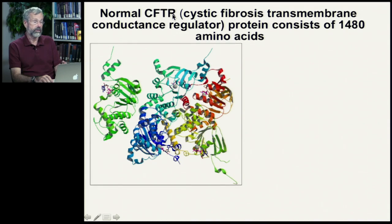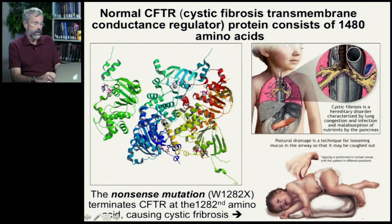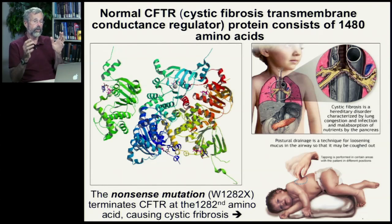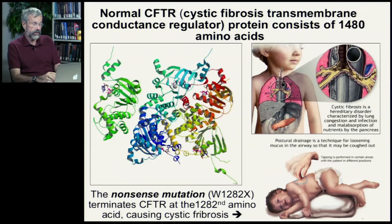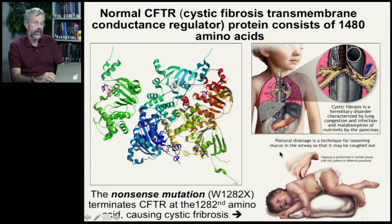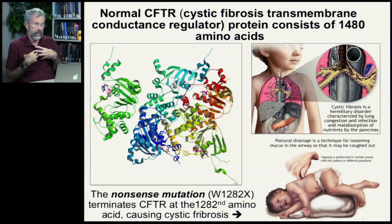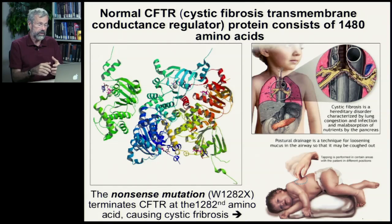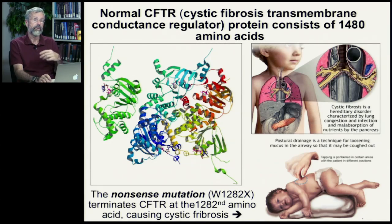This is an example of a genetic disorder called cystic fibrosis. The nonsense mutation known as W1282X terminates the CFTR protein after 1,282 amino acids. The normal protein should extend all the way out to 1,480 amino acids, but in this mutation, translation stops after 1,282 amino acids. That shortened version of this protein causes cystic fibrosis — a hereditary disorder causing lung congestion, infection, and a great deal of mucus in the lungs. It's a heartbreaking disease found in certain groups of people, caused by missing about 200 amino acids from the normal protein.